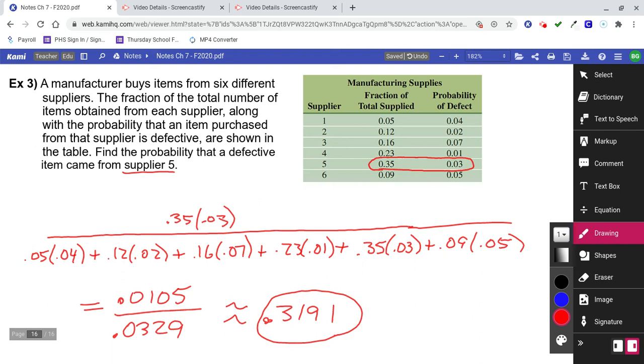And so even though that was Bayes' theorem and it looks like it's going to be really confusing, if you think about it, it's just part over total. And so that problem really wasn't that bad at all.